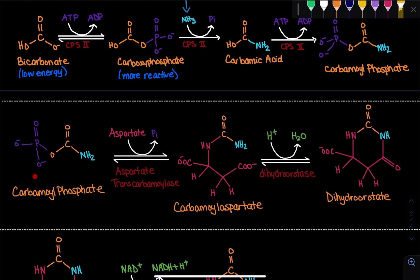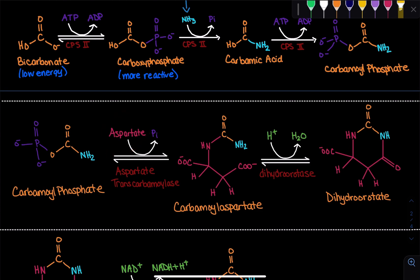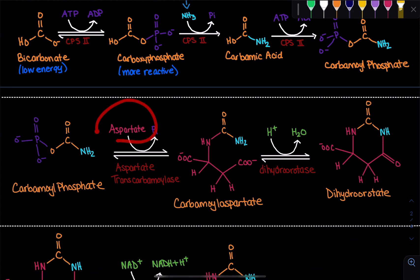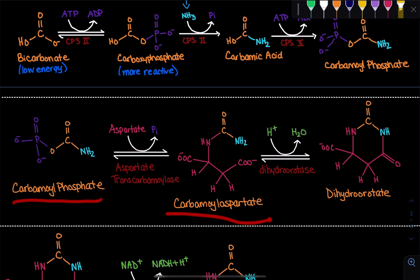This phosphate acts as a good leaving group, and aspartate comes in and binds to that carbon. Aspartate is an amino acid — important to note because in the de novo pathway of synthesizing pyrimidines, we use amino acids. So far we've used two amino acids: glutamine to donate that first nitrogen, and now aspartate, which provides the second nitrogen. This step is catalyzed by aspartate transcarbamoylase, and we go from carbamoyl phosphate to carbamoyl aspartate.